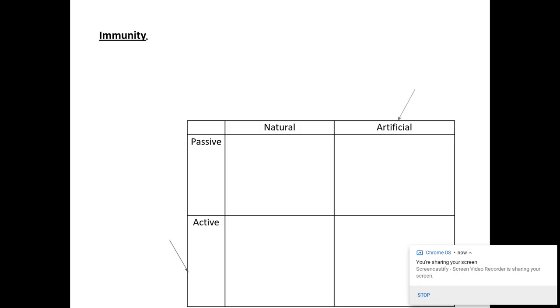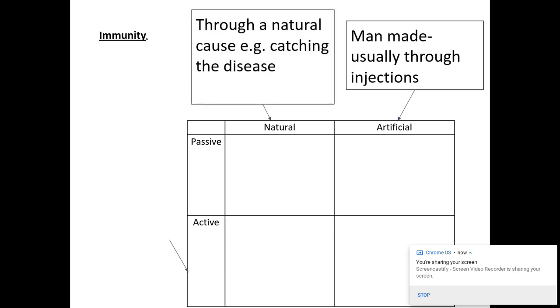All right, so artificial immunity, these are normally generated through man-made interactions, for example, through injections, whereas the natural ones are obviously more natural. For example, catching the disease or getting something from your mother's breast milk or over the placenta.